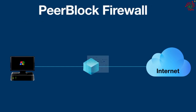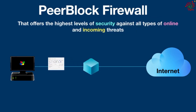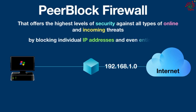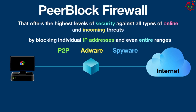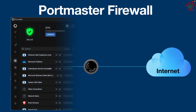Number six: PeerBlock. PeerBlock is one of the best firewalls offering a high level of security against all types of online and incoming threats. It runs quietly in the background enforcing user-defined rules without requiring constant oversight. It works at a fundamental level by blocking individual IP addresses and even entire ranges, making it especially useful for network administrators who need precise control. During installation you can easily set it to block peer-to-peer adware and spyware, cutting off many potential threats. It also allows you to create your own block lists and even block entire countries or organizations.